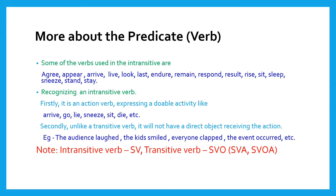Here are some verbs used as intransitive: agree, appear, arrive, look, rise, sit, etc. To recognize an intransitive verb: firstly, it is an action verb expressing a doable activity like arrive, sneeze, sit; secondly, it will not have a direct object receiving the action — for example, 'the audience laughed,' 'the kids smiled,' 'the event occurred.' In conclusion, an intransitive verb has only a subject and a verb, whereas a transitive verb has a subject, verb, and object.